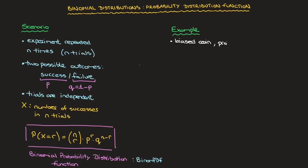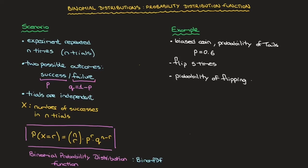The biased coin is such that the probability of flipping tails is p = 0.6. We flip the coin five times, and we're interested in finding the probability of flipping exactly three tails.